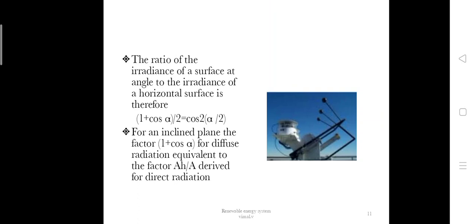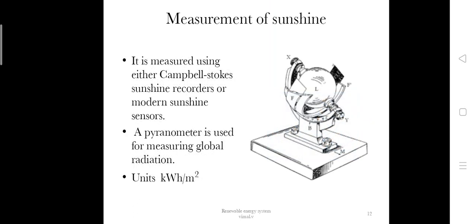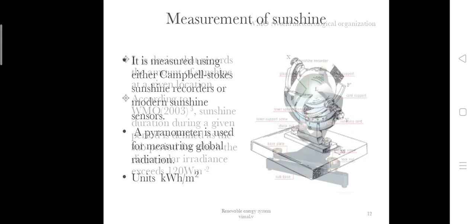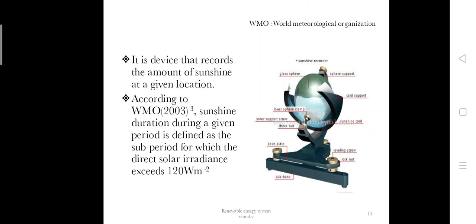Measurement of sunshine: it is measured using either Campbell-Stokes sunshine recorders or modern sunshine sensors. A pyranometer is used for measuring global radiation with units of kilowatt-hours per meter squared.